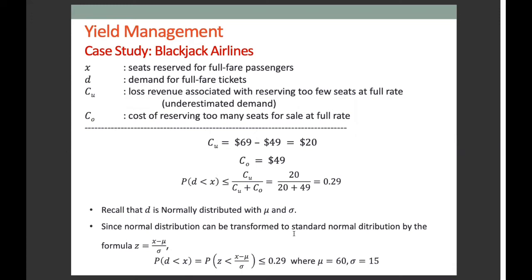Considering recent experience, the demand for full-fare tickets has a normal distribution with a mean of 60 and a standard deviation of 15. We use the critical fractile approach to determine the number of seats to be reserved for full-fare passengers, where X is the number of seats reserved and D is the demand for full-fare tickets. The underage cost is the lost opportunity — the difference between the fares $69 and $49 — which equals $20. If we reserve fewer seats than demanded, this lost revenue corresponds to the underage cost.